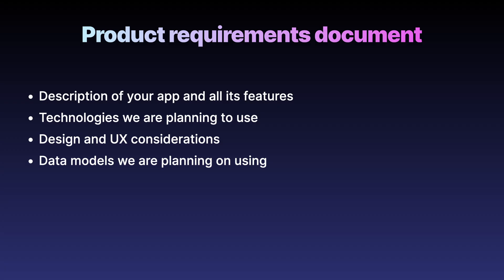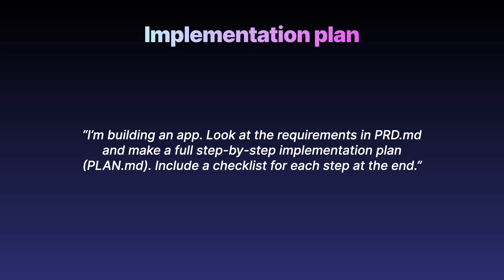Then the technologies you'll use, any design and UX considerations, and any special data models or project structures you want to use. When you have this in place, you can create an implementation plan. I usually have the agent generate the plan based on the PRD. For example, I'll say: 'I'm building an app. Look at the requirements in the PRD.md and make a full step-by-step implementation plan — a plan.md document. Include the checklist for each step at the end.' This produces a plan.md with steps and checklists. The checklist is super useful because the agent can check off steps as it goes, which gives it a kind of memory for where it left off and what's next.